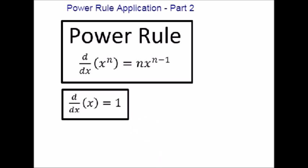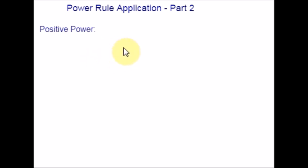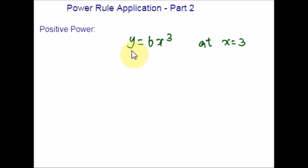Now let us start with the third case: positive whole powers of x. This is a very common type of function to differentiate, which has n as a positive whole number. Let me take one example directly and discuss how we are going to use the power rule in this case. We are supposed to differentiate y = 6x³ and then find its gradient at x = 3.